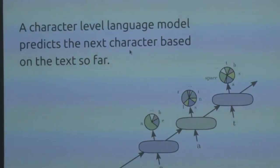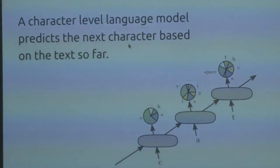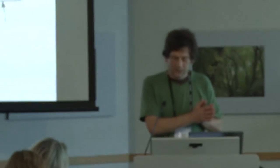A character-level language model predicts the next character based on what it's seen. You can also do a word-level language model, which is better but less robust against noise and strange characters. I tried using these recurrent neural networks on the Papers Past corpus, but it didn't work because the OCR was bad — there was just too much noise.